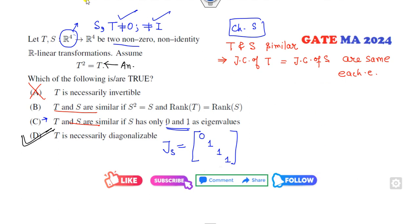Can you define the Jordan block of T? This is the annihilating polynomial, so the eigenvalues are 0 and 1. It may be that the characteristic polynomial of T will be X cubed, X minus 1. Then in that case, your answer will be here.